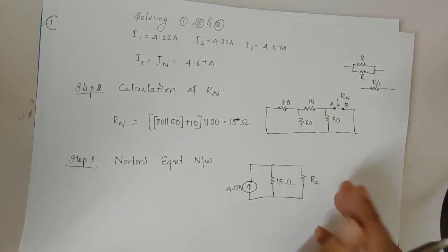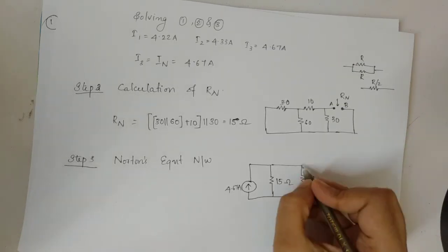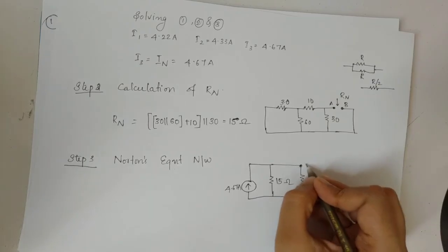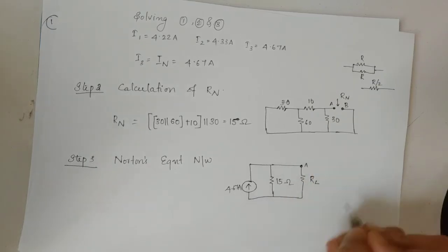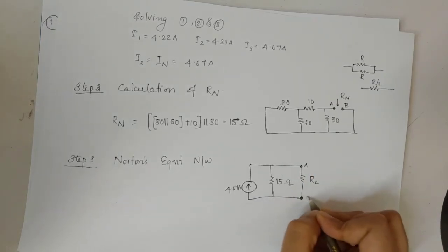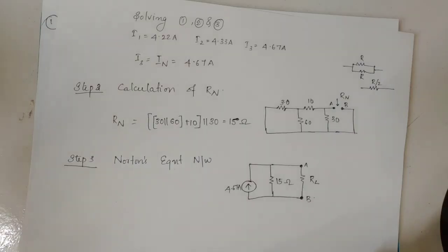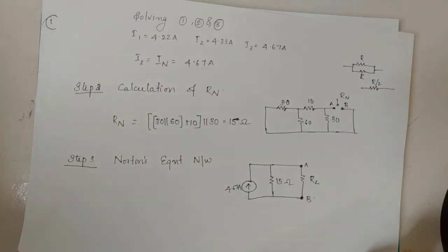The current flowing through RL can be found from this Norton equivalent network. This is how we draw the Norton equivalent network.